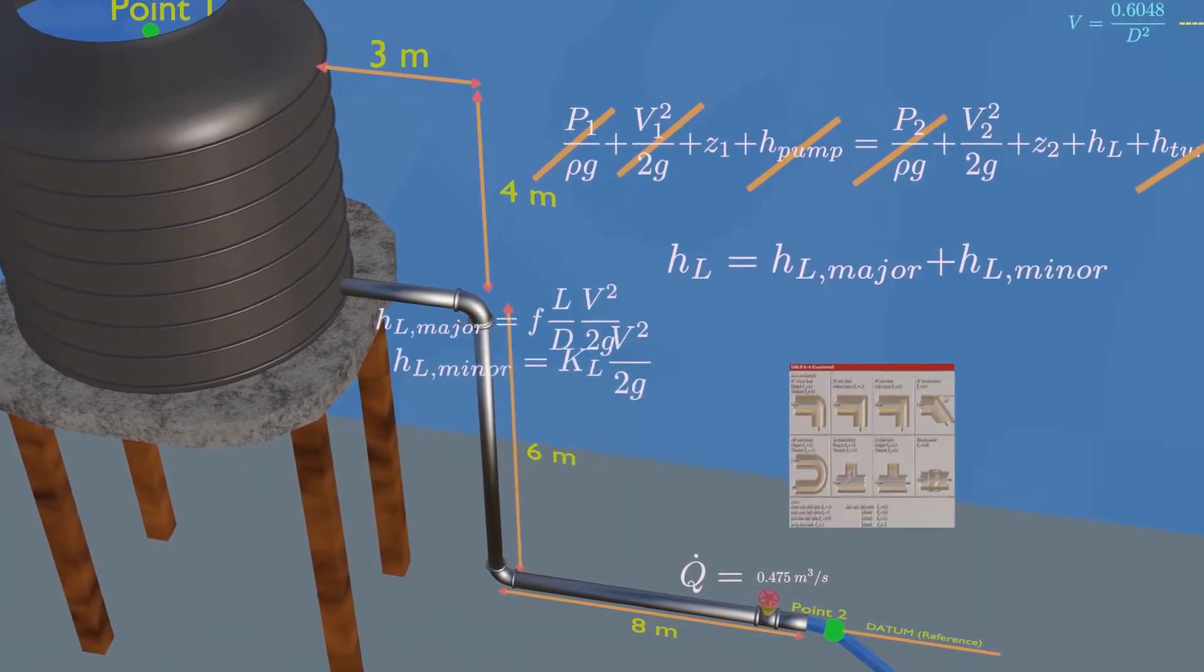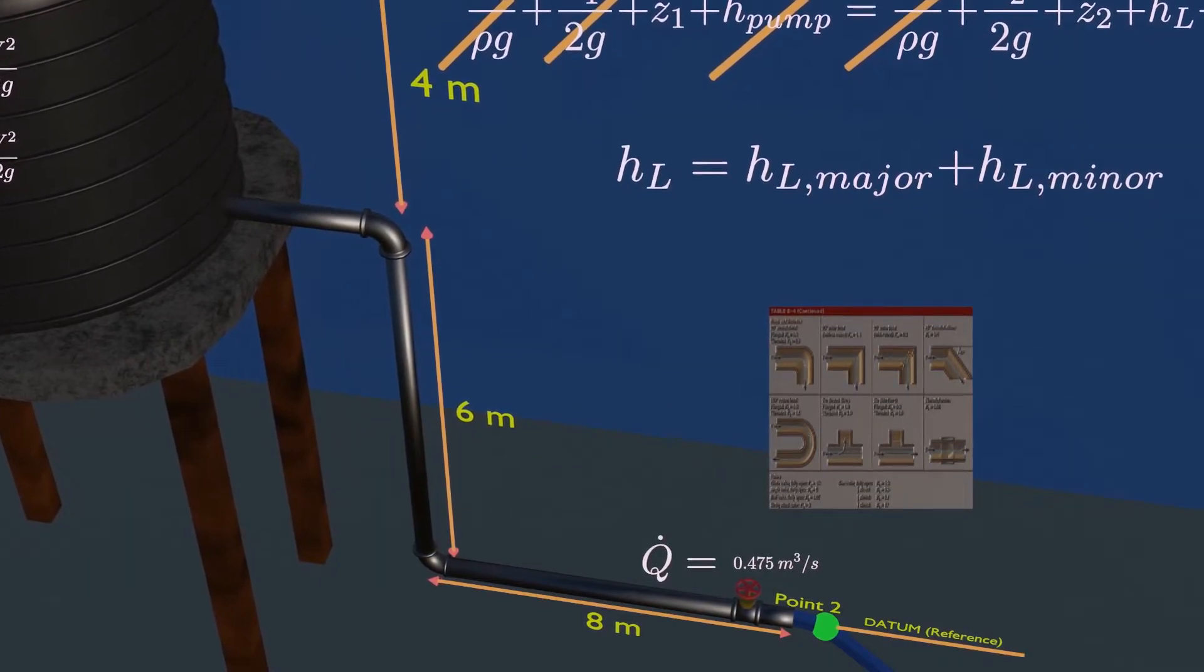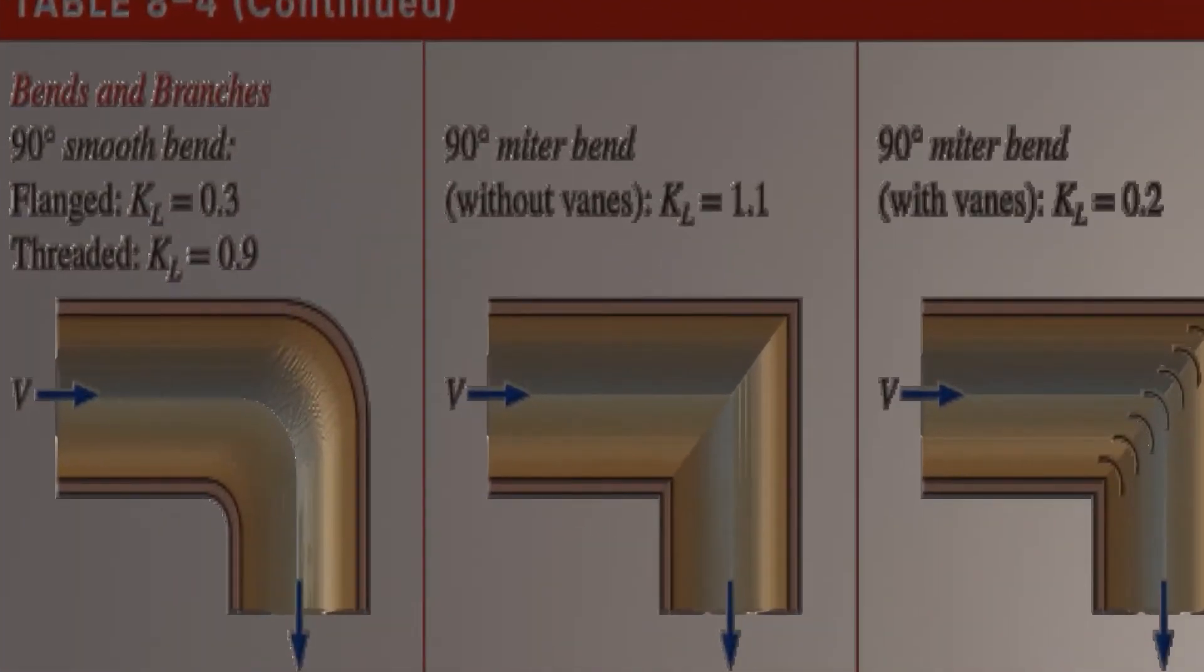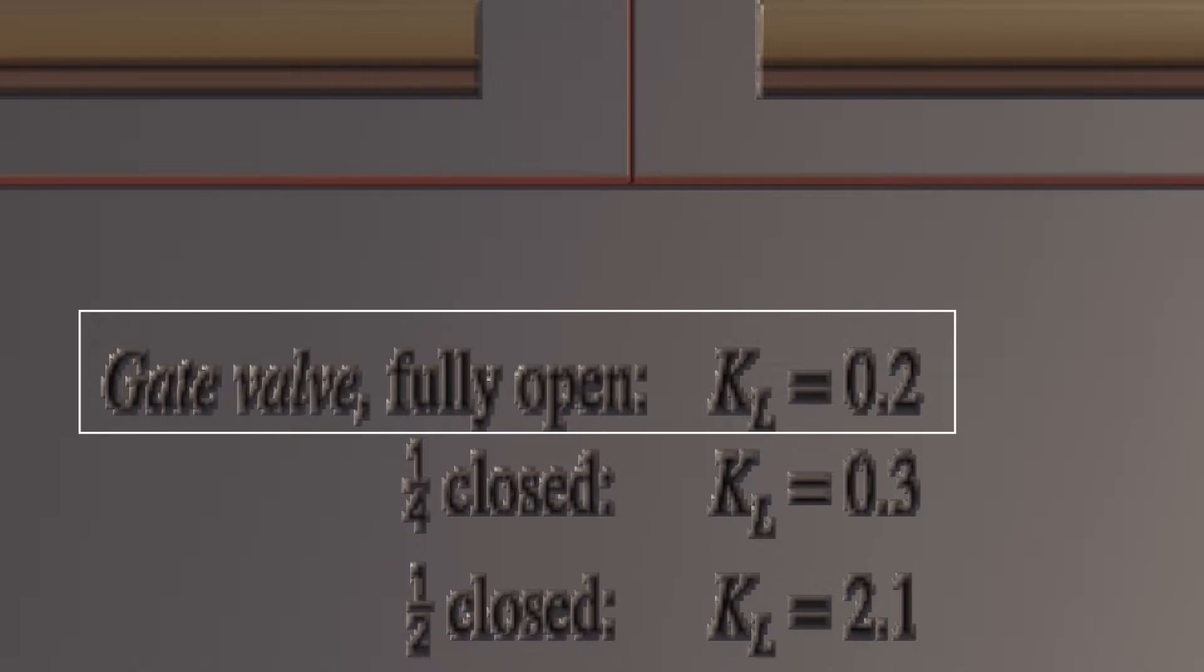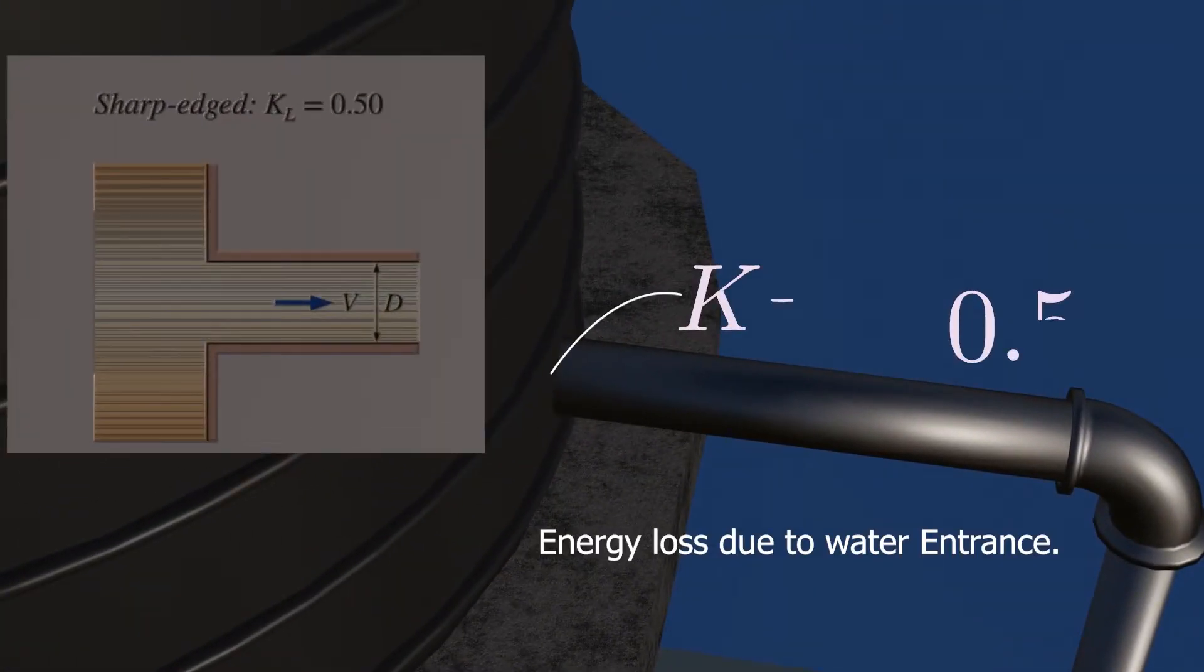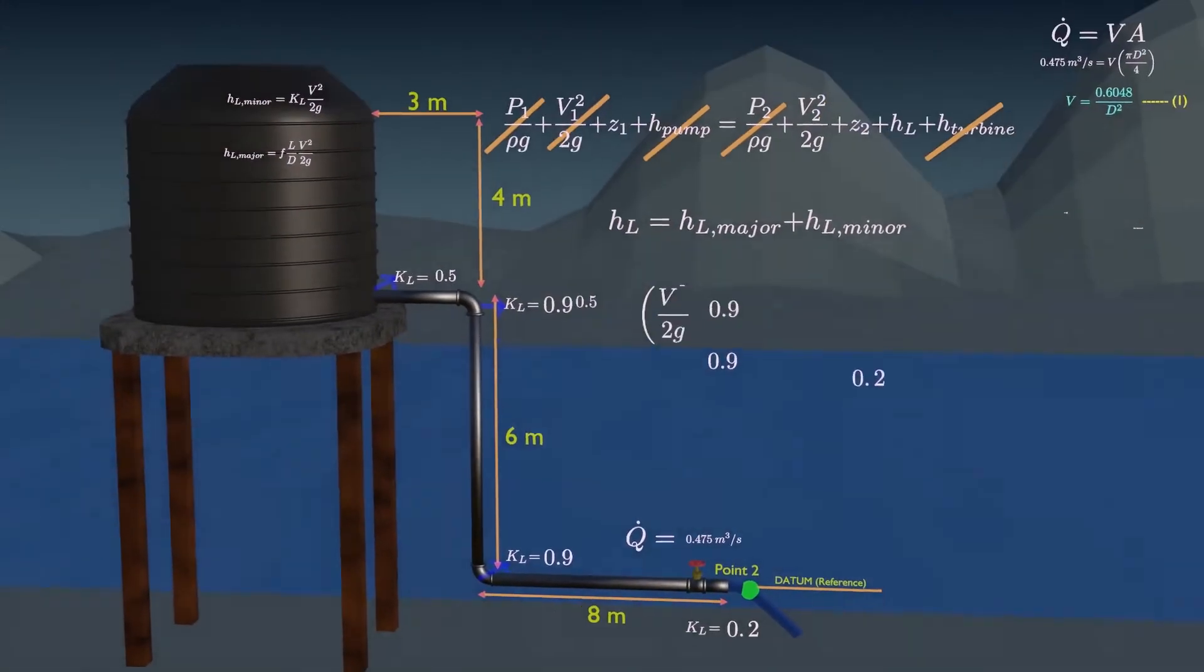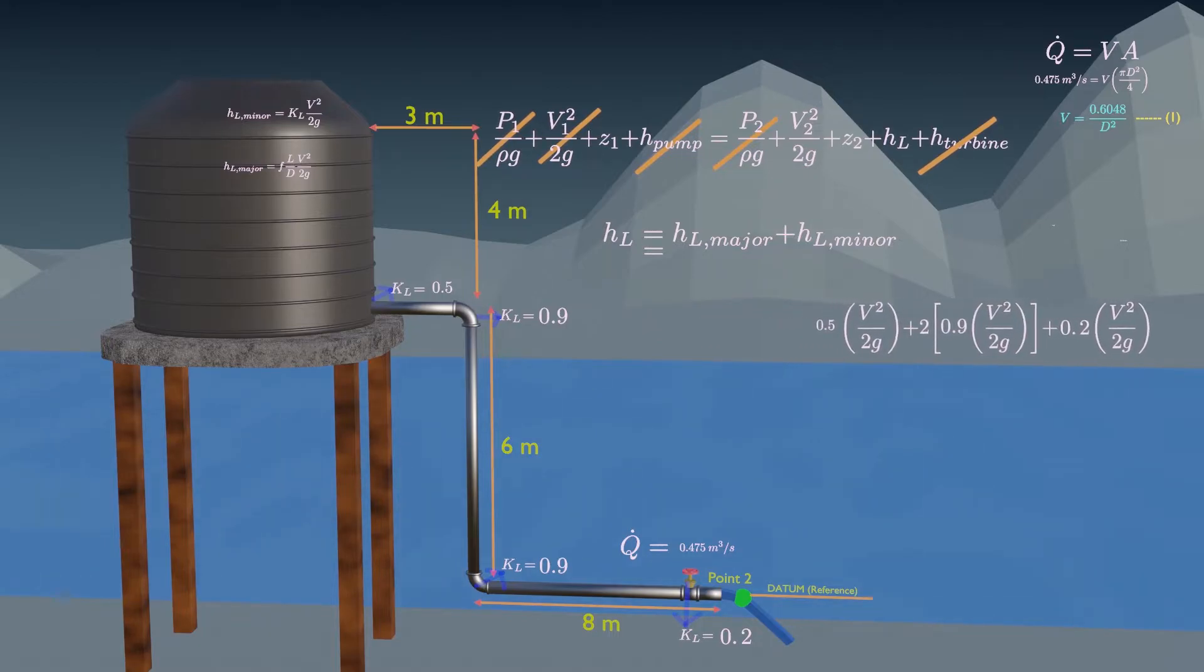For loss coefficient, design manuals often provide such data. In our case, there are two elbows, and loss coefficient for each of them is 0.9. Whereas the loss coefficient for a fully open gate valve is 0.2. There is also minor head loss due to flush entrance, so don't forget about it. Summing up the total minor head loss for now and the total head losses.